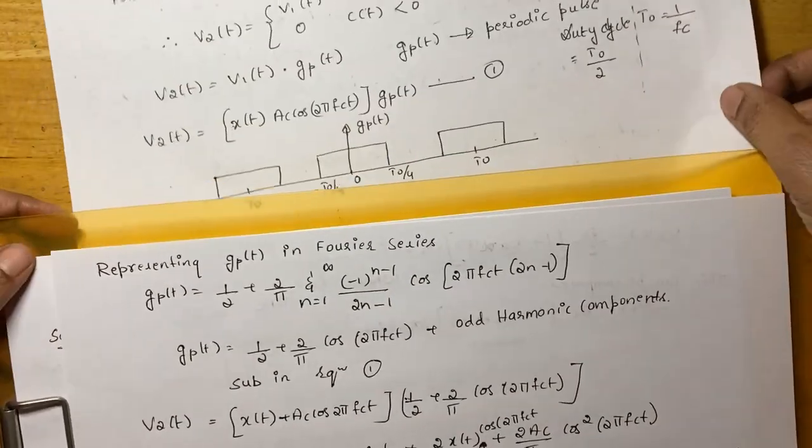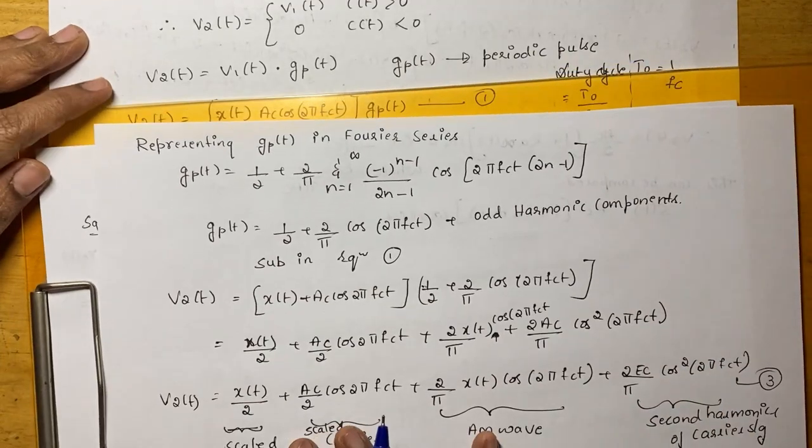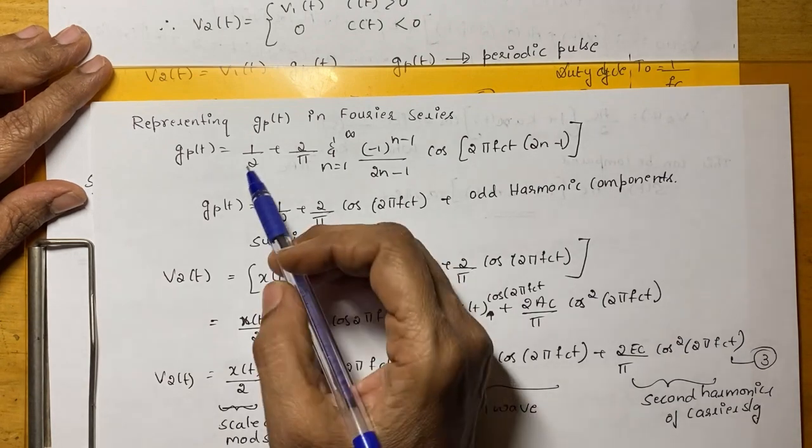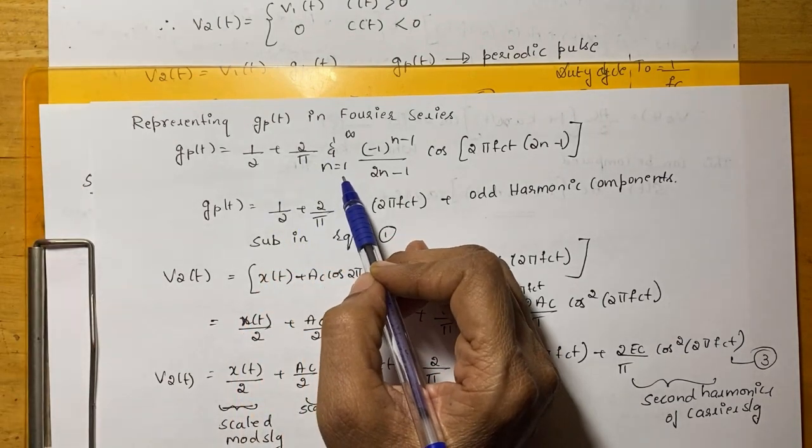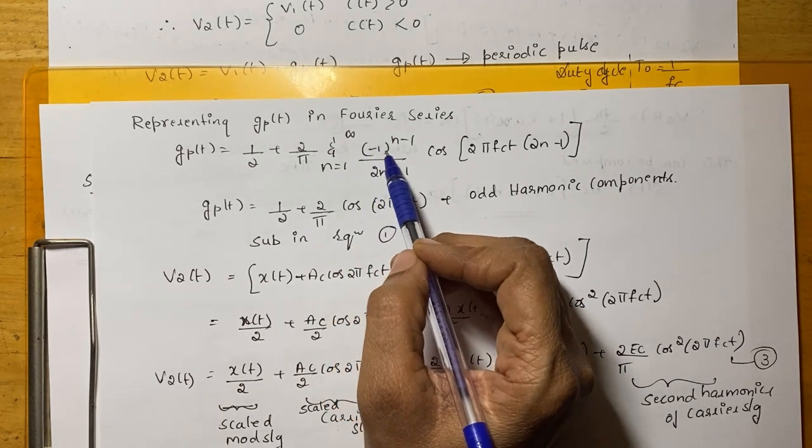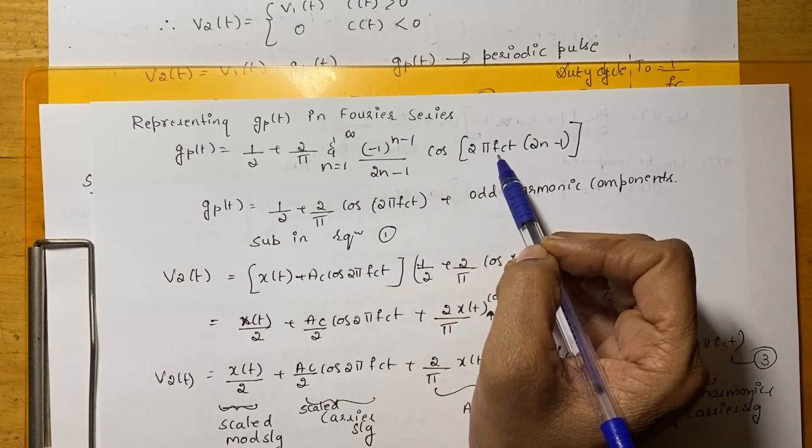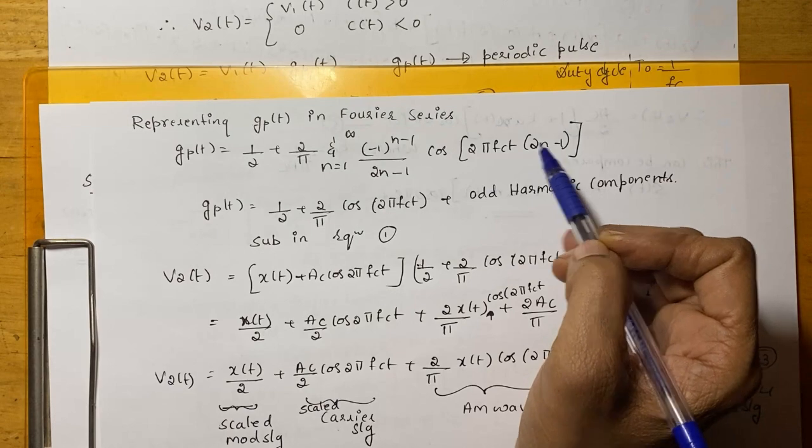Now, representing this GP(t) in Fourier series, we can write down as GP(t) = 2/π summation of N = 1 to infinity (-1)^(N-1)/(2N-1) cos(2π FcT(2N-1)).